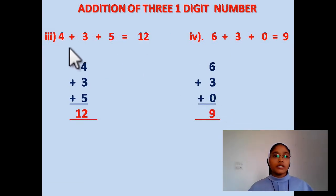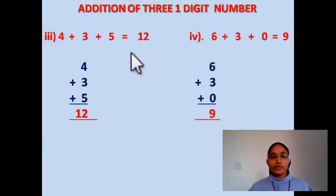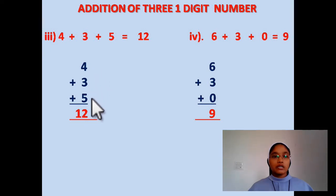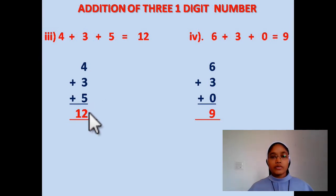Question number 3: 4 plus 3 plus 5, equal to 12. Here we have to again arrange and write these numbers one below the other and add it. 4 plus 3 is 7, 7 plus 5 is 12. So your answer will be 12.